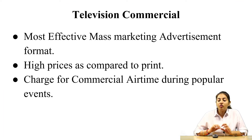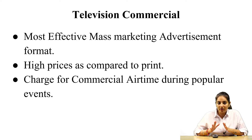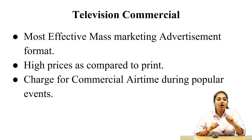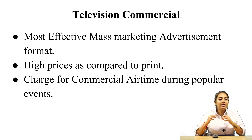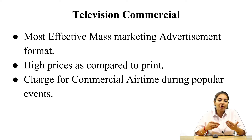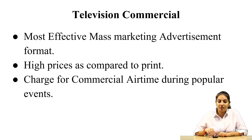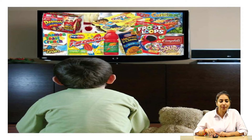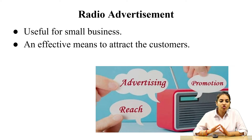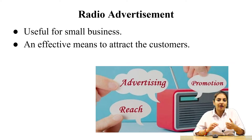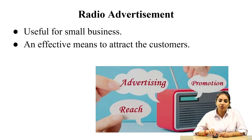Next is television commercial. This is the most effective way of doing advertisement in the masses and it has a high cost as compared to print, because they have to pay for every advertisement according to the time. Like if I am giving an advertisement for 30 seconds, I have to pay a certain amount to deliver all my message within that 30 seconds. Next is radio advertisement and it is very much useful for small businesses and local people, so that they can hear about local businesses, get to know about local products — it is a very effective way to attract customers.